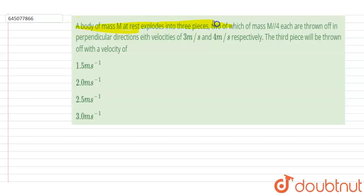Two of which of mass m by 4 are thrown off in perpendicular directions with speed 3 meters per second and 4 meters per second respectively. The third piece will be thrown off with the velocity of...